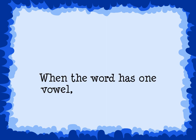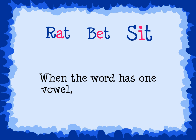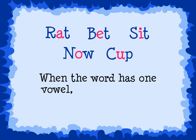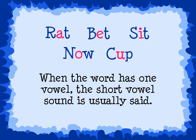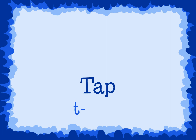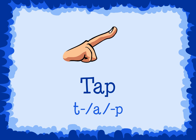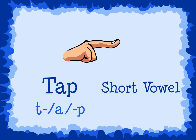Words can have short vowel sounds or long vowel sounds. When the word has one vowel — either A, E, I, O, or U — the short vowel sound is usually said. For example, the word 'tap' has the letters T, A, and P. We say 'tap,' and each letter makes these sounds: T, A, P. The short A sound is A in this word.